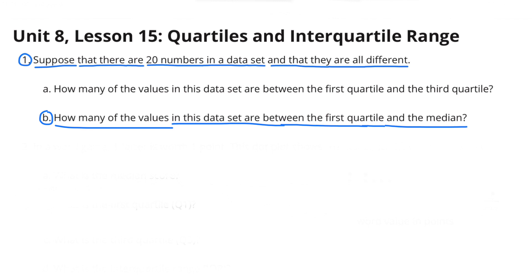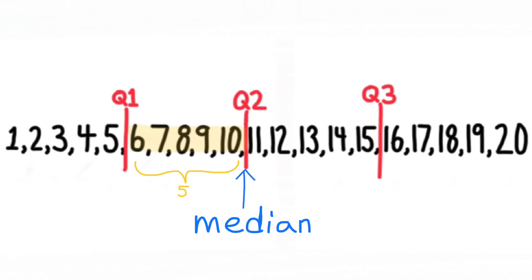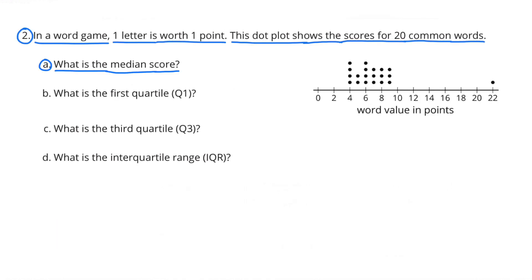Part B: how many of the values in this data set are between the first quartile and the median? Remember, the median is the second quartile, so just count the numbers that come between the first quartile and the second quartile. There's a total of five values between the first quartile and the median, or the second quartile.